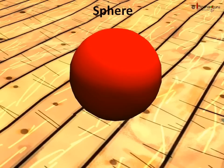This is a football. If we see it, it looks like a circle, but it has depth too. This solid shape is called a sphere.